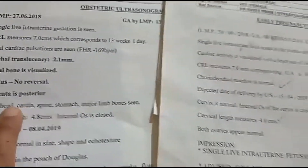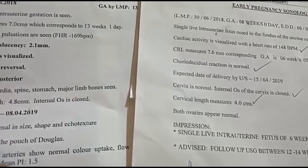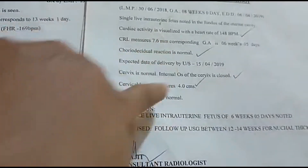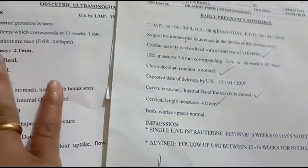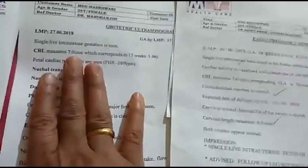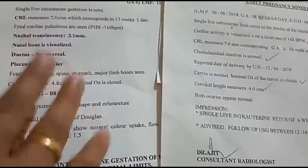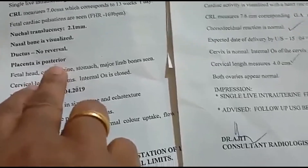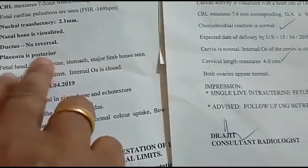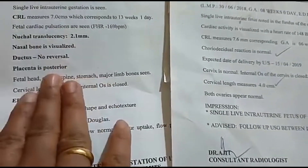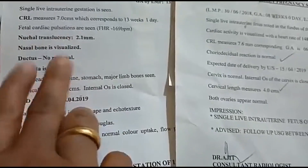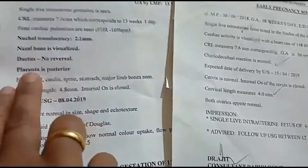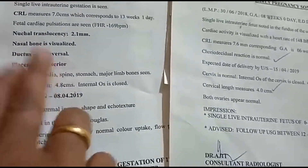This is the placenta posterior. This is the first scanning report, just for curiosity. This is a tension. This is the scanning report. This is the missing report. I will check this video. This is the pleasant girl baby's anterior.